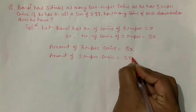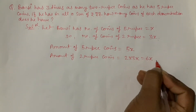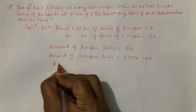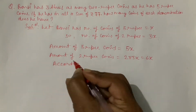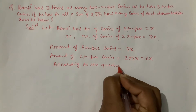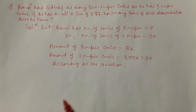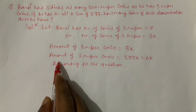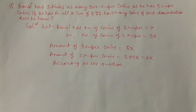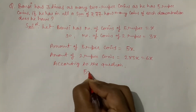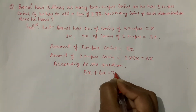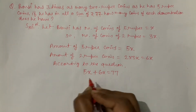Amount of 2 rupee coins = 2 into 3x = 6x. Ab according to the question, jitna amount 5 rupee coin se bana hai aur jitna amount 2 rupee coin se bana hai, agar hum unka sum kar dein toh 77 hoga. Toh equation: 5x + 6x = 77.